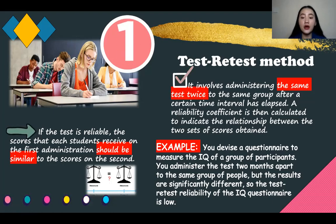And if a test is reliable, each person's scores will be completely predictable from his or her previous or first score. So for instance, with an example of the test and retest, you devise a questionnaire to measure the IQ of a group of participants and you administer the test two months apart to the same group of people.